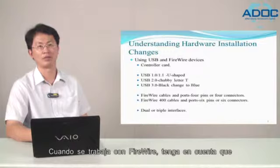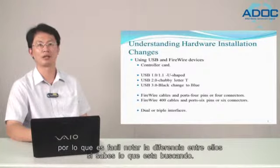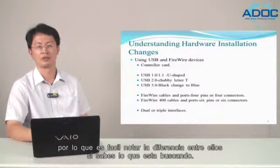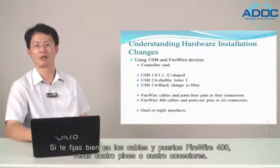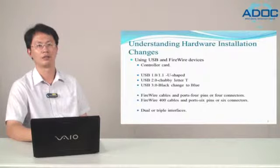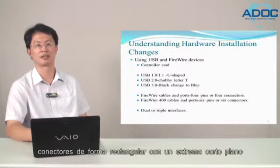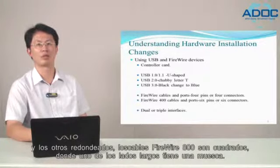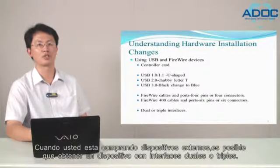When working with FireWire, keep in mind that FireWire ports and cables have different shapes and connectors, making it easy to tell the differences between them. If you look closely at the standard FireWire cables and ports, you will see 4 pins and 4 connectors. If you look closely at the FireWire 400 cables and ports, you will see 6 pins and 6 connectors. Although standard FireWire and FireWire 400 cables have rectangular-shaped connectors with one short flat end and the other rounded, FireWire 800 cables are square with one of the long sides having a notch.